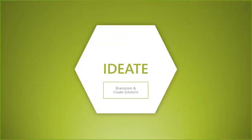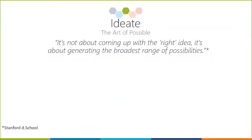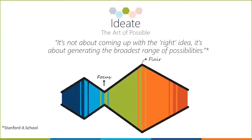After we have our problem statements agreed upon, then we move into the ideate phase, where we brainstorm and create solutions. Ideation is not about coming up with the right idea — it's about generating the broadest range of possibilities. When we started design thinking, we flared out a little bit, then brought that focus back in so we narrow down and have our defined statement. But then we move into the ideate phase and flare it out again — blow it up, come up with as many wild and crazy ideas as we can — then narrow it down, prototyping, and completing our focus through tests.